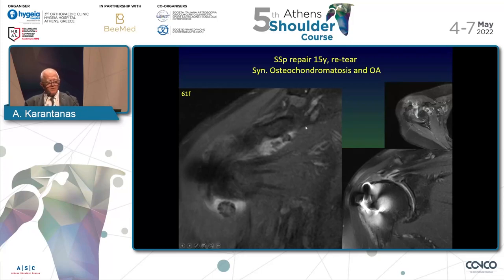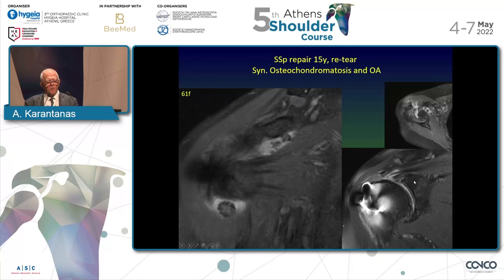The geyser sign may also be seen with CT arthrograms — the iodine contrast goes up and enters the acromioclavicular joint on oblique sagittal images. In another patient, 15 years after operation, there is a large loose body in the joint with smaller loose bodies, a retear with retraction, and synovial osteochondromatosis together with osteoarthritis — osteophyte formation and joint space narrowing. Synovial osteochondromatosis here is secondary, not primary — it results from synovial metaplasia due to chronic irritation.